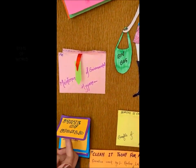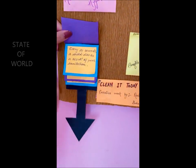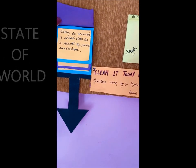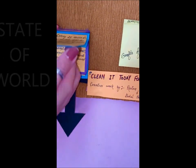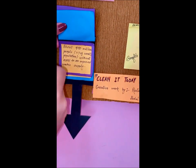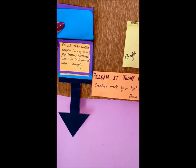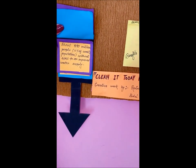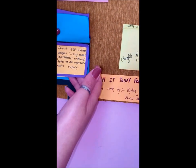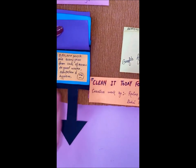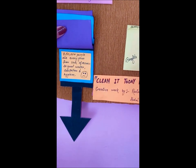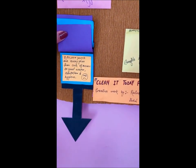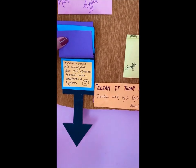Now we will see the state of the world. Every 20 seconds a child dies as a result of poor sanitation. About 790 million people — 11% of the world's population — are without access to an improved water supply. 850,000 people die every year from lack of access to good water and sanitation.